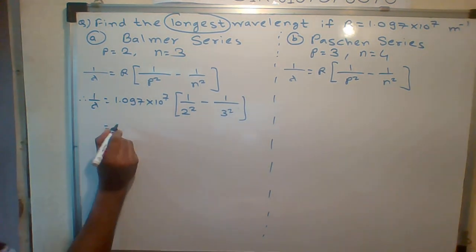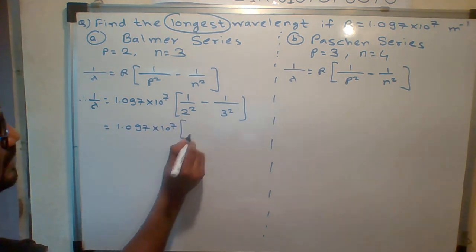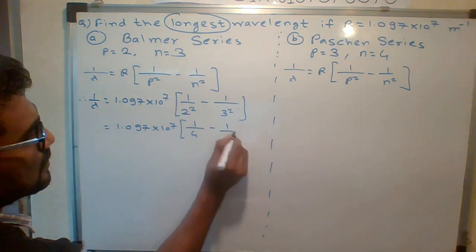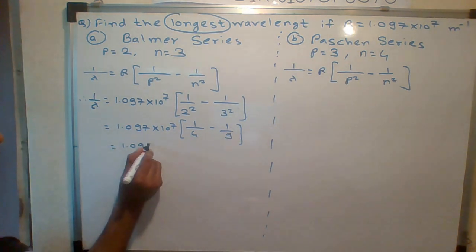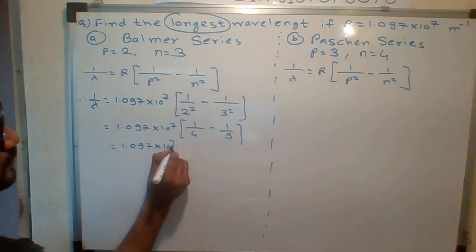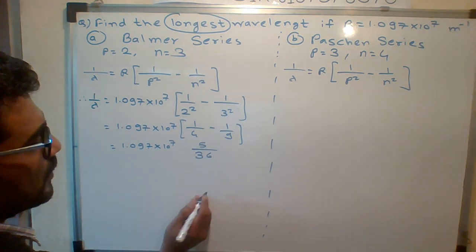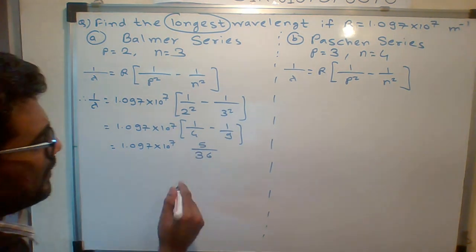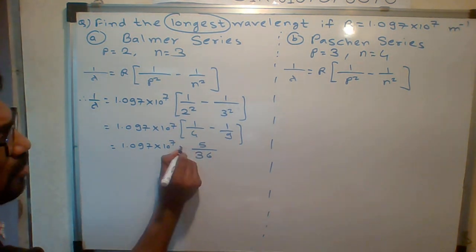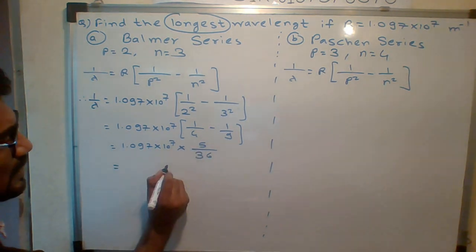1.097×10⁷. This is 1/4, this is 1/9. 9 minus 4 is 5. 5 upon 9×4 is 36, so 5/36. In the next step, you can divide or take log to get the final answer. I will just multiply: 5×9 is 45.